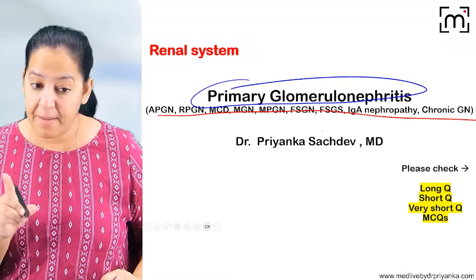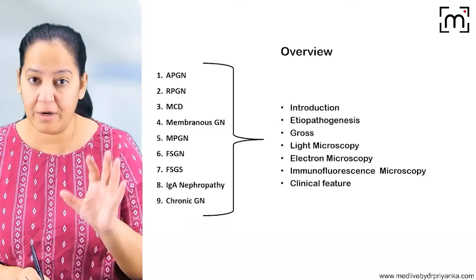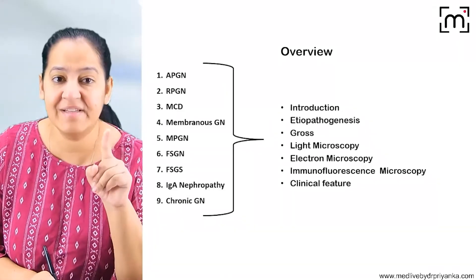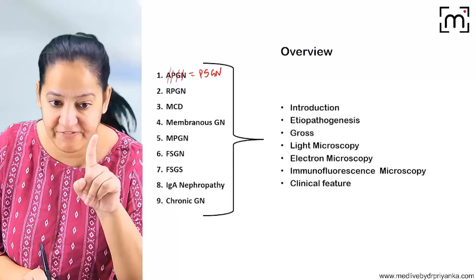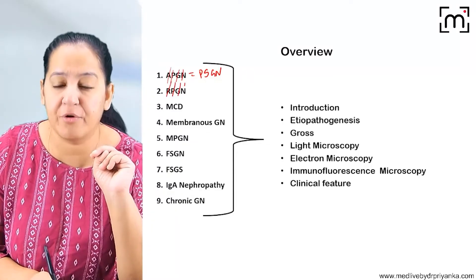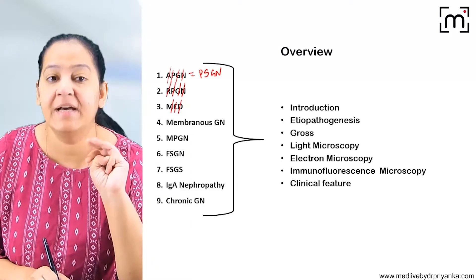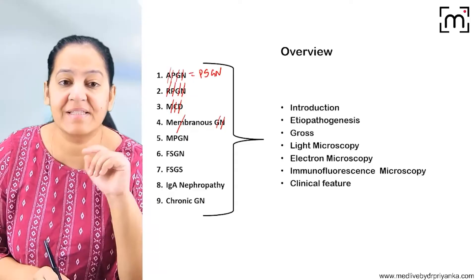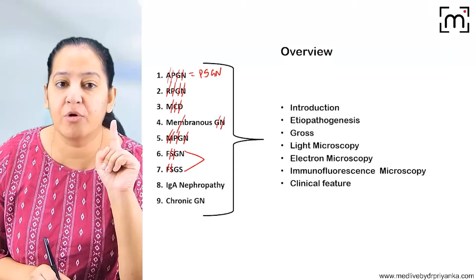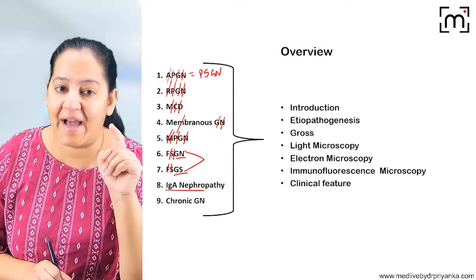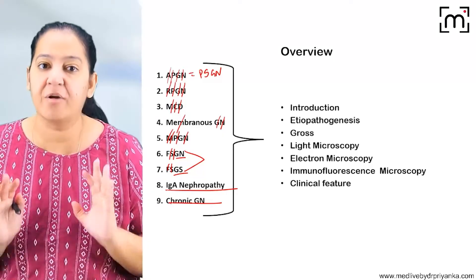Let's start with an overview of what we are going to discuss. First, acute proliferative glomerulonephritis, also known as post-streptococcal glomerulonephritis. Second, rapidly progressive glomerulonephritis (RPGN). Third, minimal change disease (MCD). Then membranous glomerulonephritis, membranoproliferative glomerulonephritis, focal segmental glomerulonephritis, glomerulosclerosis, IgA nephropathy, and chronic glomerulonephritis.